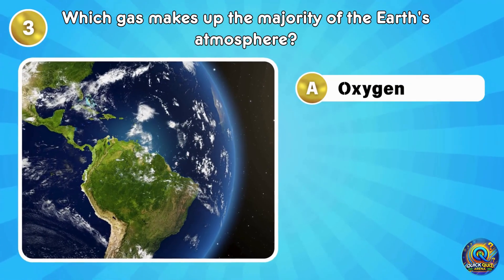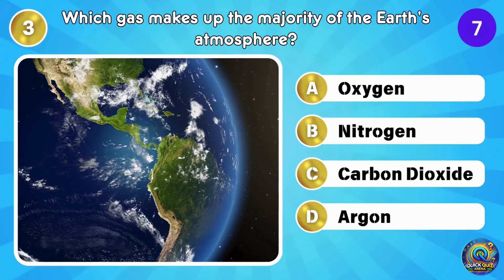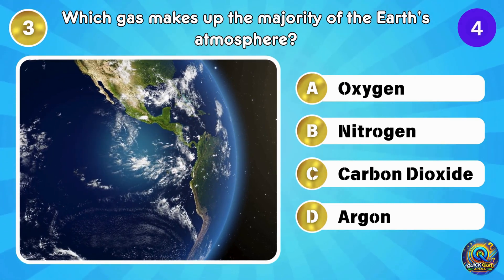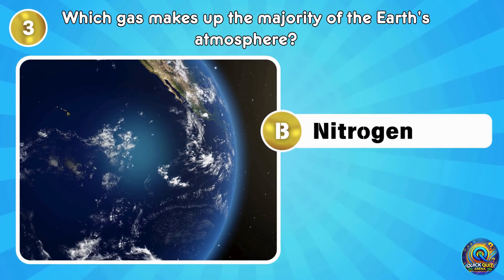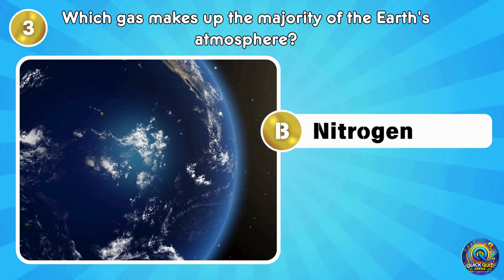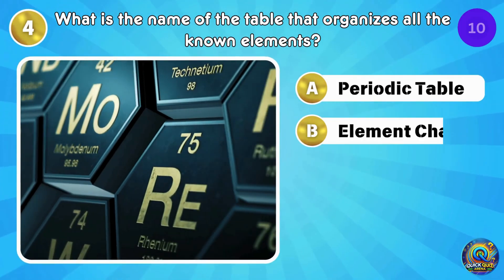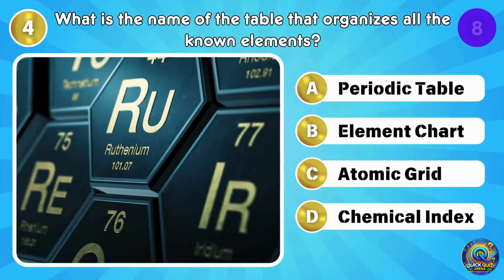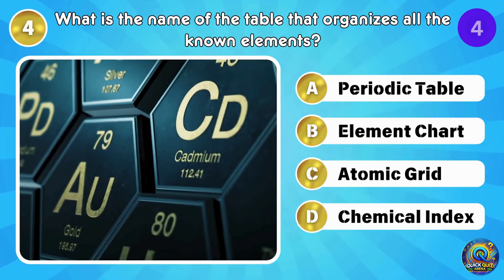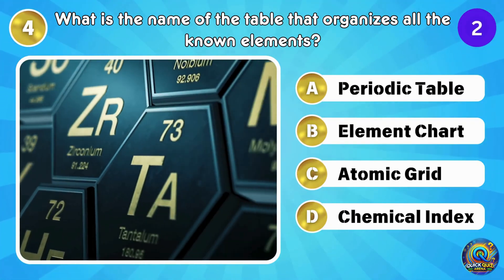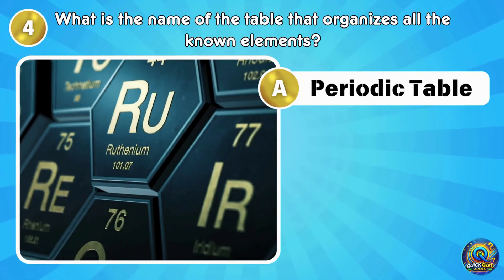Which gas makes up the majority of the Earth's atmosphere? The answer is nitrogen — 78% of the air we breathe is nitrogen. What is the name of the table that organizes all the known elements? The answer is the periodic table, like a seating chart for chemical elements.